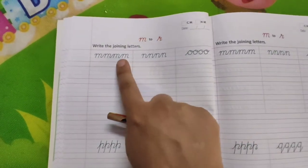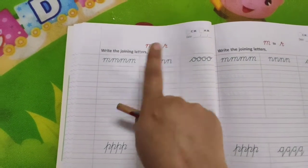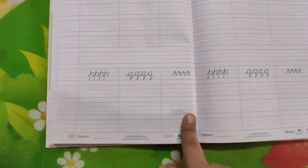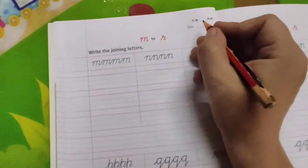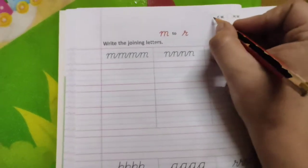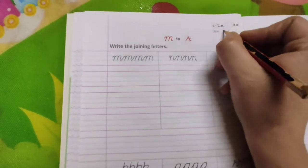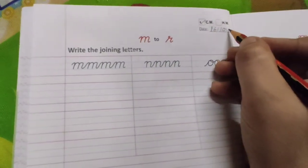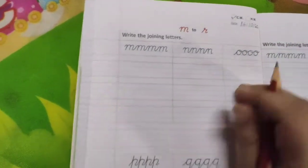The small cursive letters M to R we will practice. Okay, it was missed out. So we are doing this time. Alright, so what you need to do? Here classwork, you will take this and mention the date 16-10-2020. Alright,